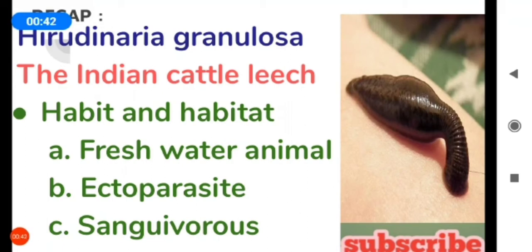Its habit and habitat: it is a freshwater animal and an ectoparasite. Ectoparasite means it lives on the outside of the body of the host. It has a sanguivorous mode of nutrition, meaning it is a blood-sucking animal.